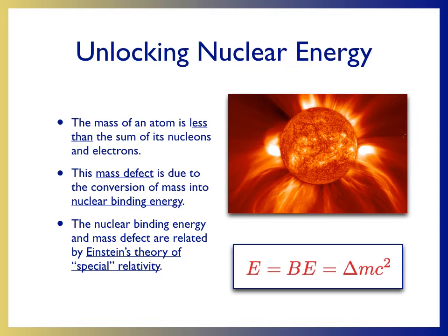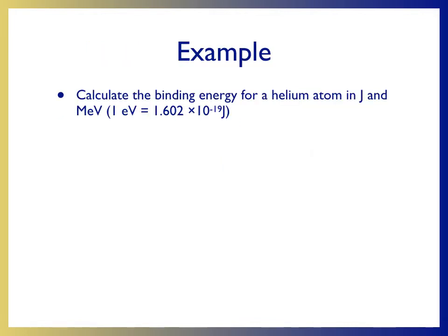Let's do a calculation to figure out how much energy can be released. Let's calculate the binding energy for a helium atom. We're going to calculate this value in joules and mega electron volts. An electron volt is a unit of energy used for atomic processes. One electron volt is 1.602 times 10 to the minus 19 joules. To think about calculating a nuclear binding energy, we have to think about what parts make up a helium atom. Here's an equation that represents this. Helium has two protons, two neutrons, and the helium atom will have two electrons. All of these parts will make up a helium atom.